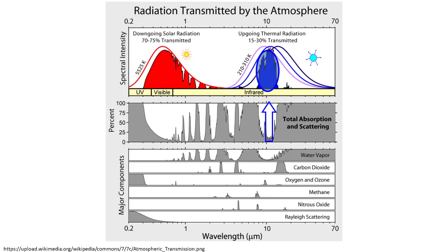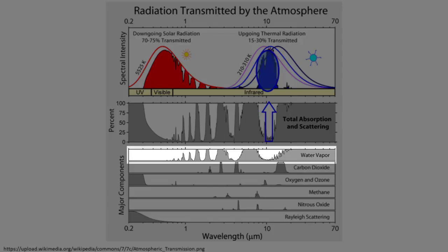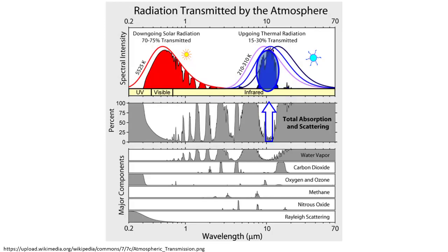The next panel down shows the absorption patterns for water vapor. You can see that water vapor will absorb some of the shortwave radiation, but it's mainly absorbing longwave radiation that's been re-emitted by the warm surfaces in the earth atmosphere system.